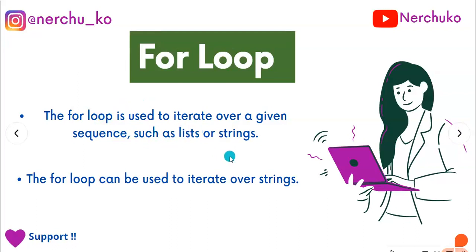The for loop is used to iterate over a given sequence, such as a list or strings. We will use the basic for loop to iterate strings. We will use some examples.